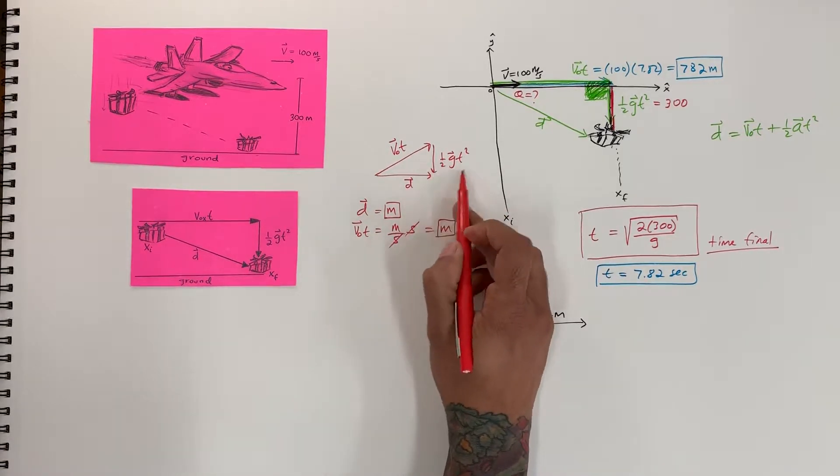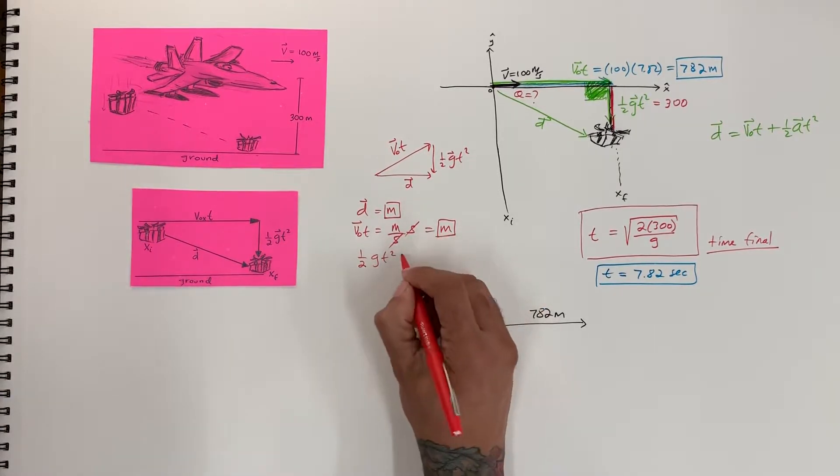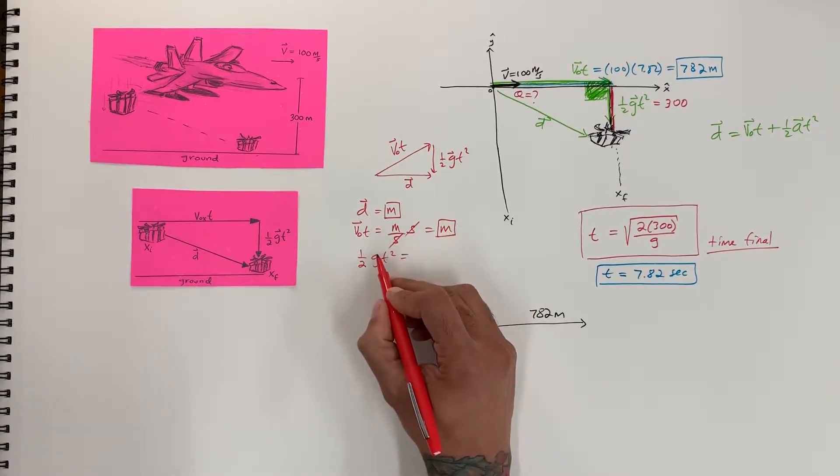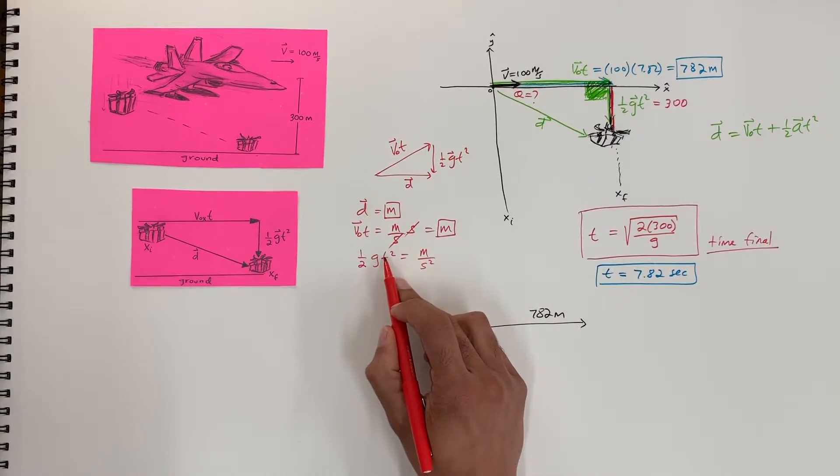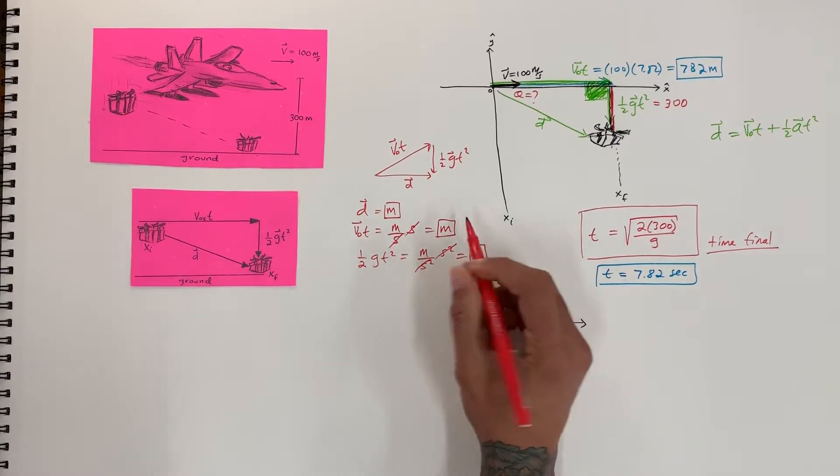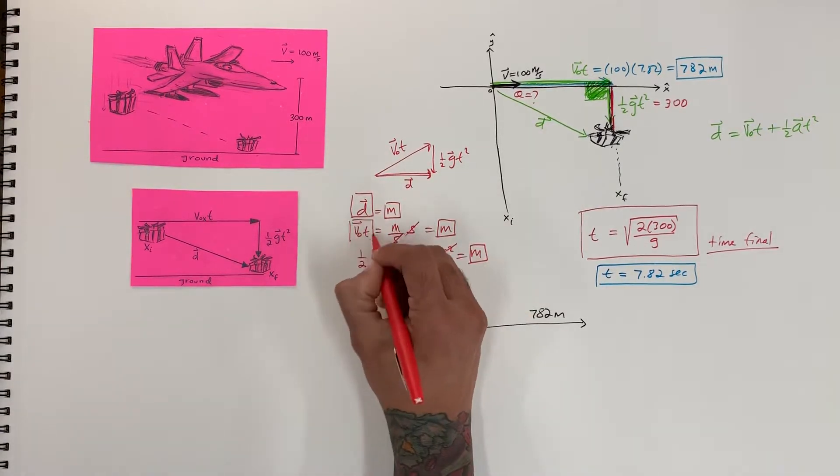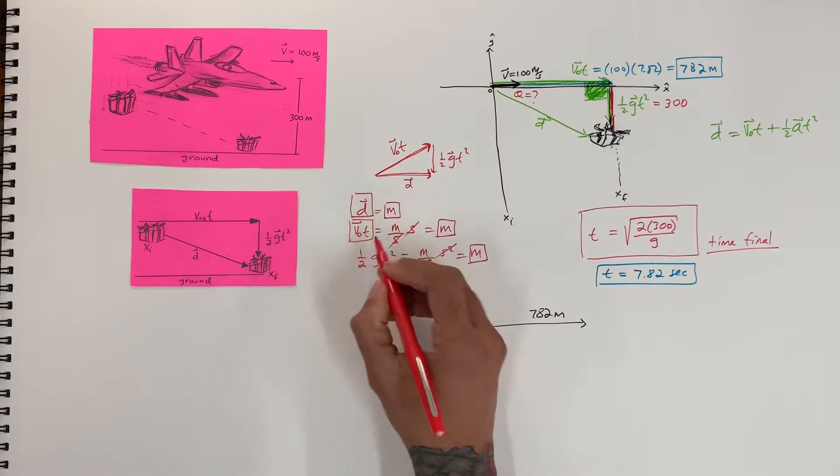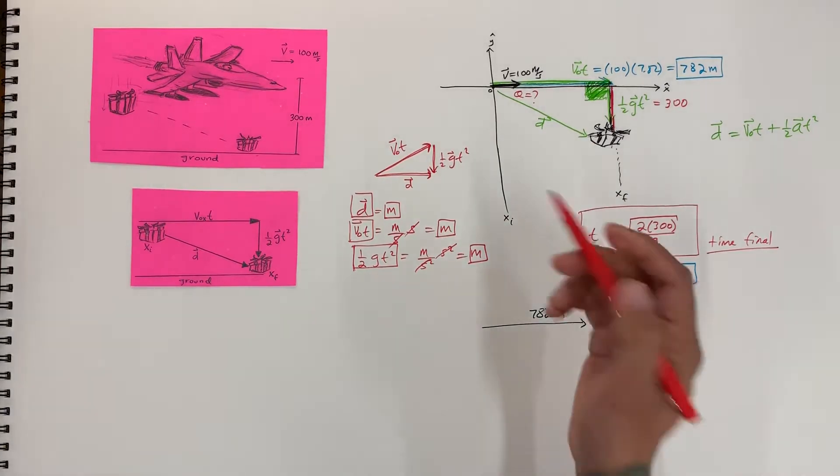And we have our last vector here, which is one-half g t squared. And if we look at the units, we got meters per second squared. That's for gravity. So we got m second squared and for t we got second squared on the top. And so that cancels out. And you see that these are all displacement vectors. This is a displacement vector and this on top is a displacement vector and our last one which is gravity is a displacement vector. So they all measure length.